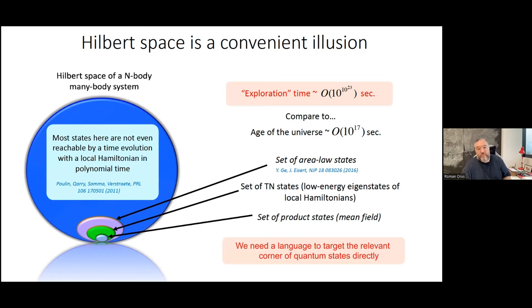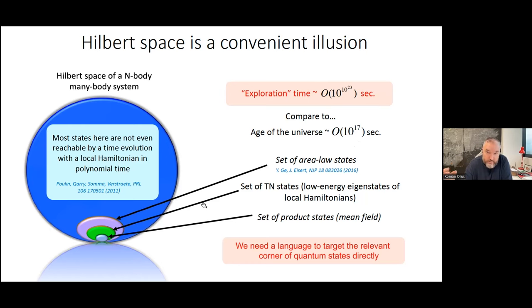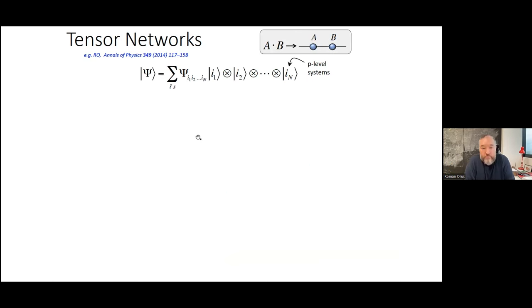To put numbers on it: for a system close to the thermodynamic limit with 10^23 spins, the exploration time of the Hilbert space is 10^(10^23) seconds — a double exponential — compared to the age of the universe, which is of order 10^17 seconds. This tells us we have a problem. If we want to describe nature at low energies, we need a different language: tensor networks. We need a formalism that targets directly this exponentially small corner of relevant states.